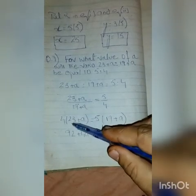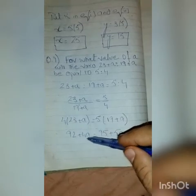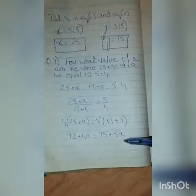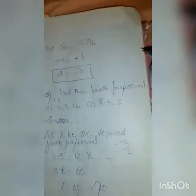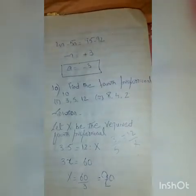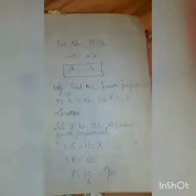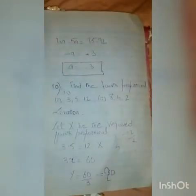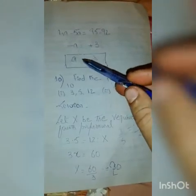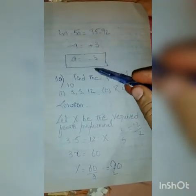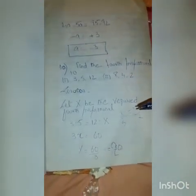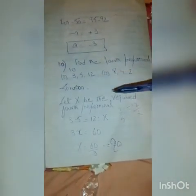After cross multiplying we get 92 + 4A = 95 + 5A. Solving: 4A minus 5A equals 95 minus 92, so minus A equals 3, and therefore A equals 3.